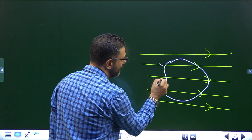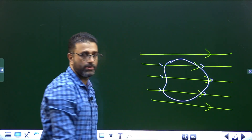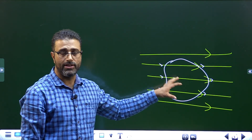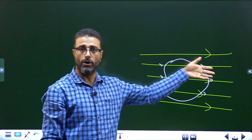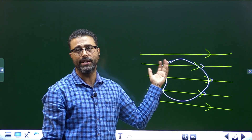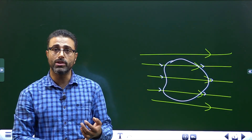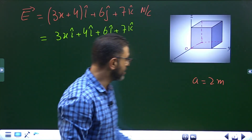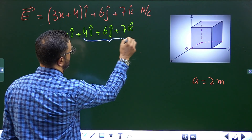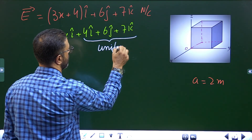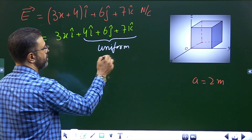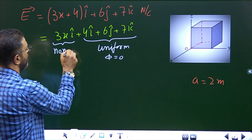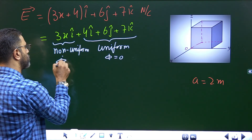the total inward flux is the same as the total outward flux — the number of field lines going into the surface equals the number coming out. So the net flux is zero, since inward flux is negative and outward flux is positive. Therefore, flux through a closed surface in a uniform electric field is zero. The uniform part 4i + 6j + 7k will not contribute anything to the flux.